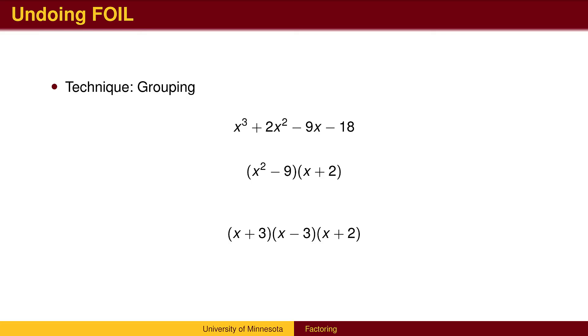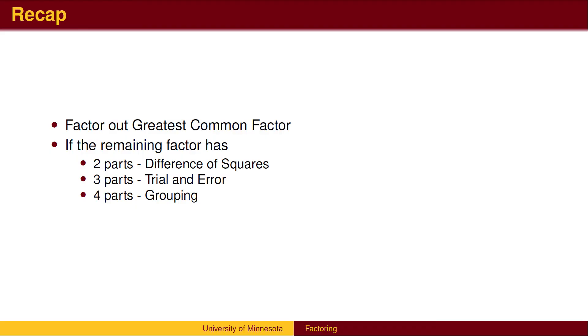More than one factoring technique may be present in any given problem. To recap, to begin the factoring process, look for common factors and factor out the greatest common factor. In what remains, if it has two terms, look for the difference of squares pattern. If it has three terms, it likely comes from a standard FOIL process. If it has four terms, try factoring by grouping.